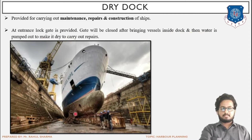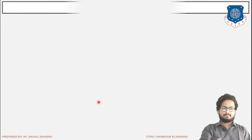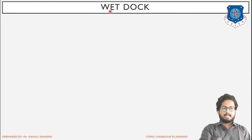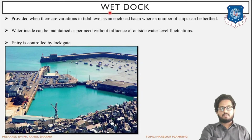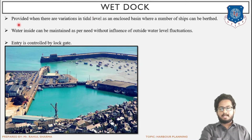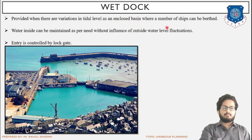Dry dock also has various elements but we will keep up to here and learn the elements later. Next is wet dock. As the word used is 'wet', it will have the existence of water. It is provided when there are variations in tidal level, as an enclosed basin where a number of ships can be berthed.